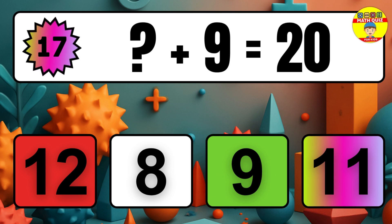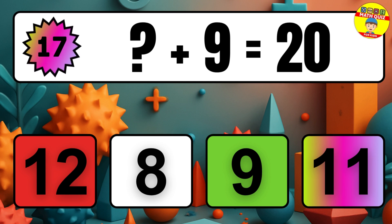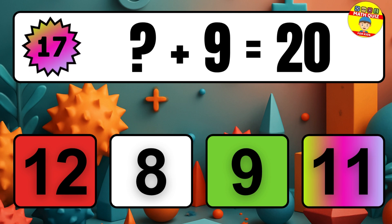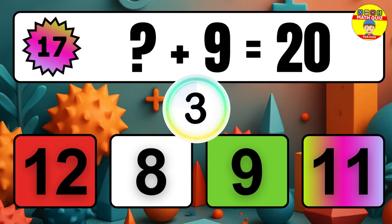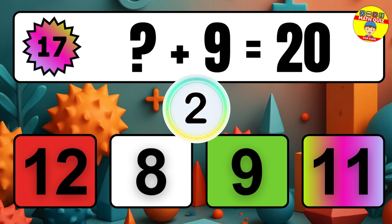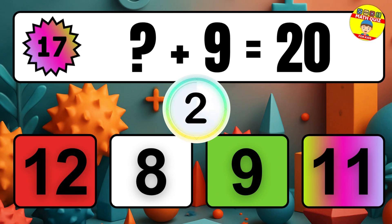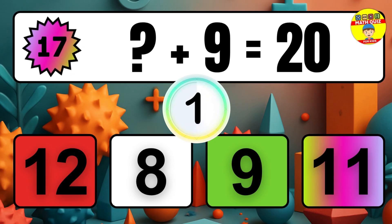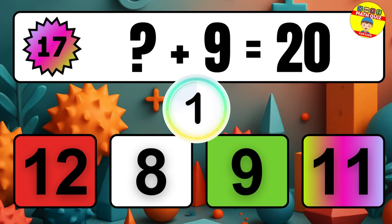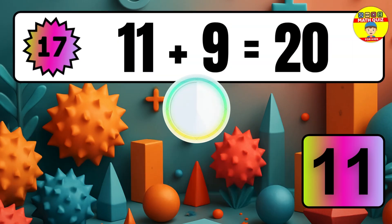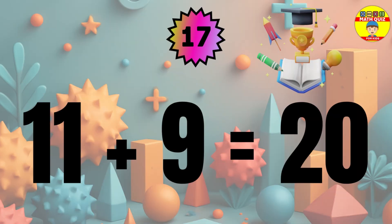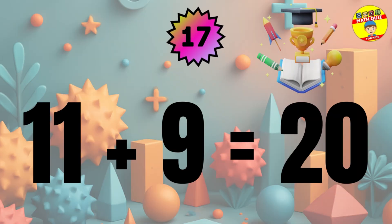Question 17. What number plus 9 equals 20? The missing number is 11.